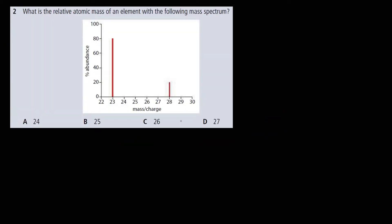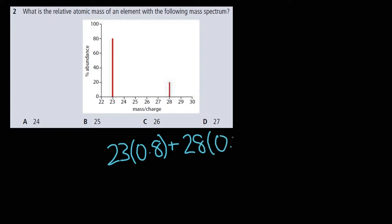What is the relative atomic mass of an element with the following mass spectrum? This isn't too difficult — we just need to interpret the graph and calculate a weighted average. We see mass 23 at 80%, which gives 23 × 0.8, and mass 28 at 20%, which gives 28 × 0.2. Doing the weighted average gives 24, so the answer is A.